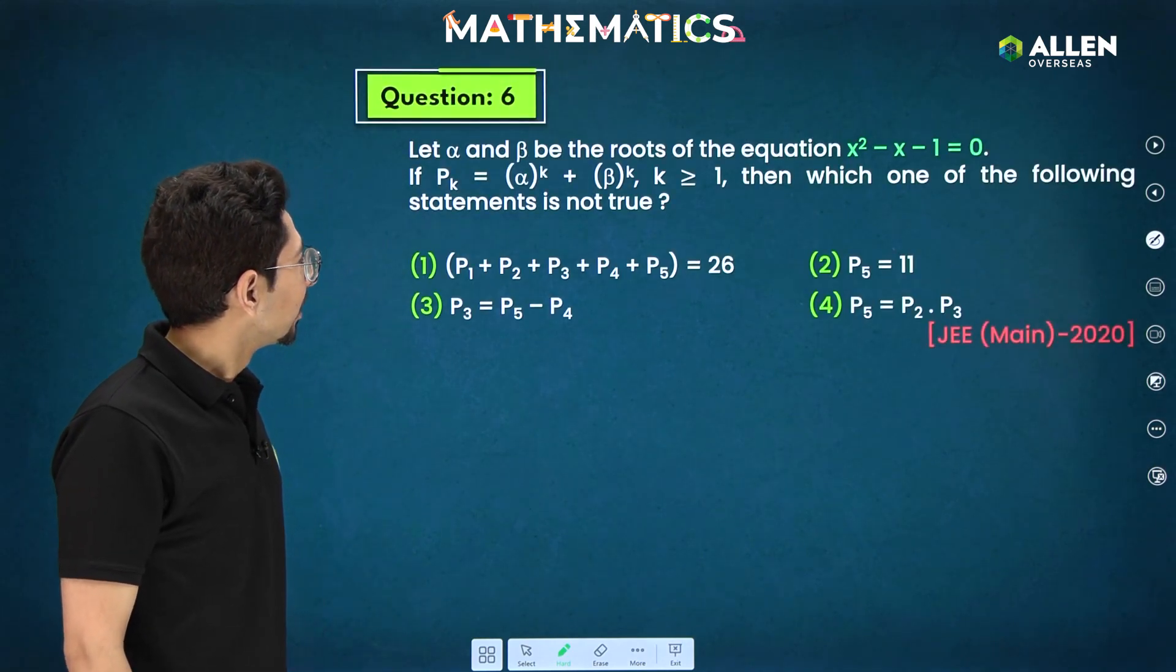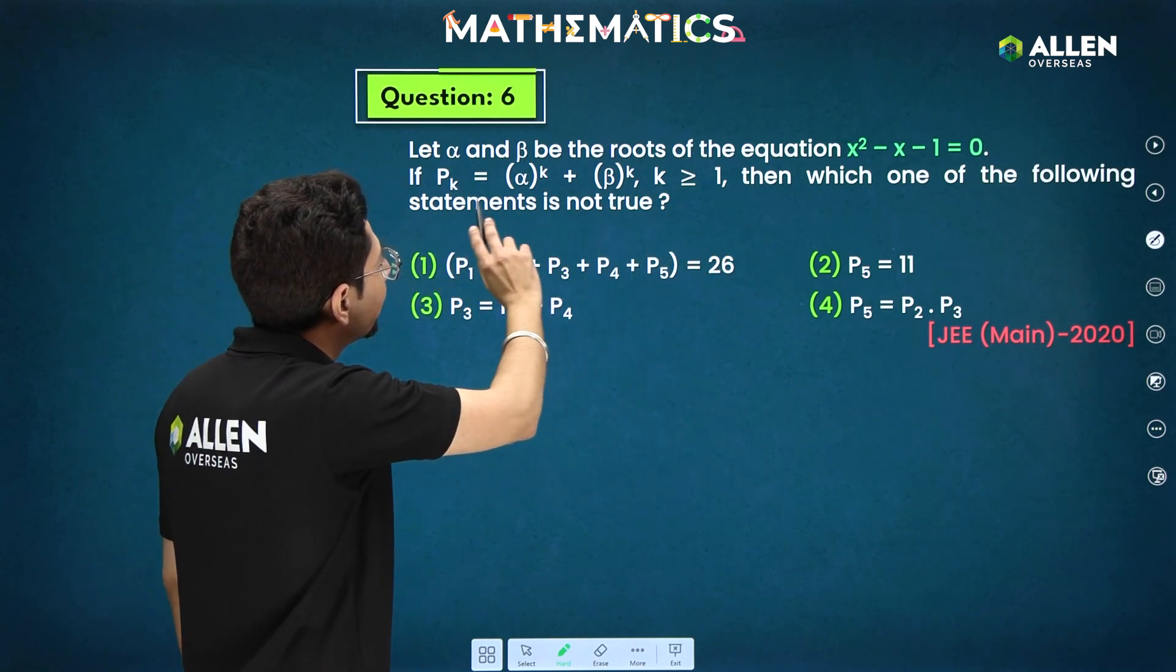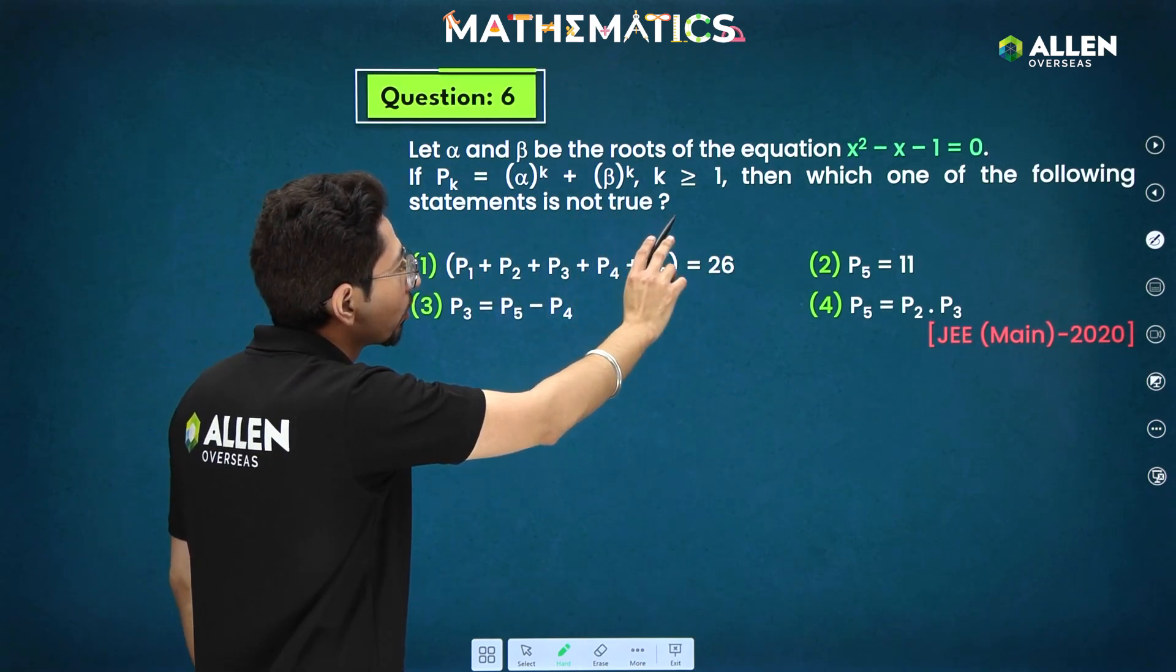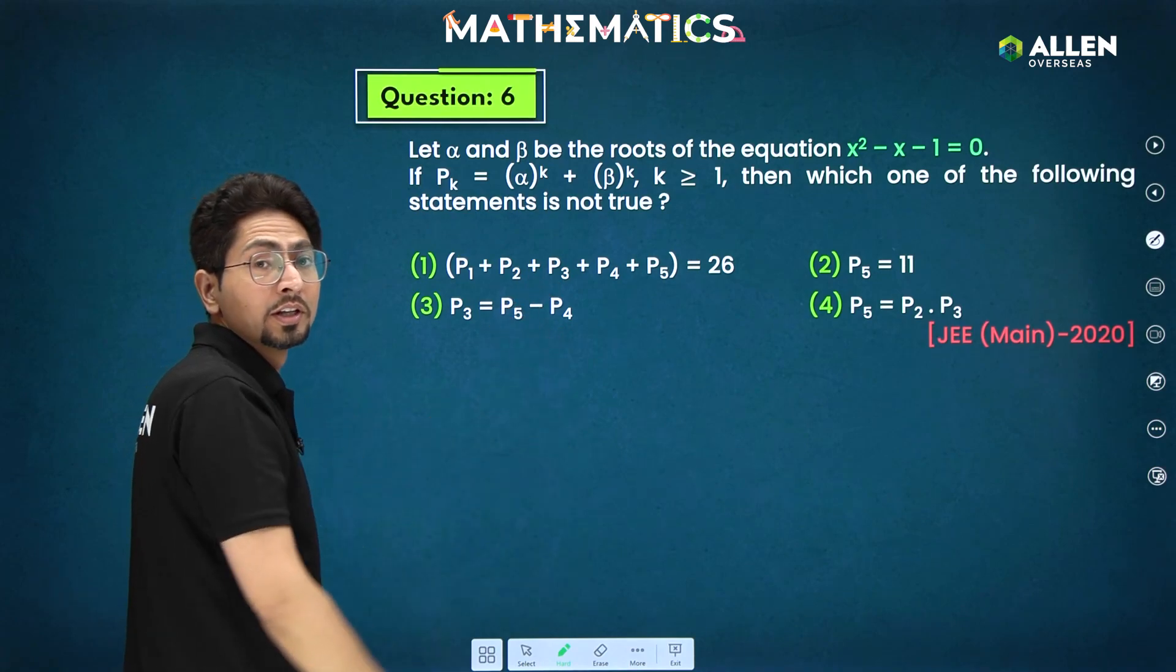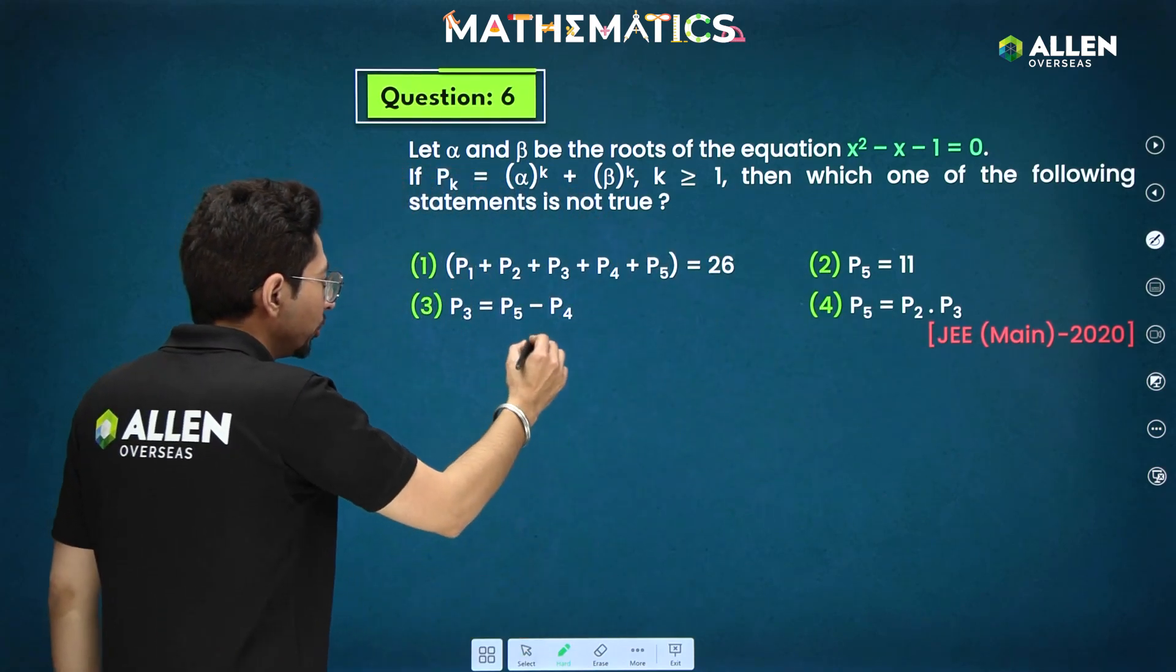This is given here. Let alpha beta be the roots of the equation. pk is defined k greater equal 1. Then which of the following is not true? This was also asked in JEE Main 2020. So make sure you do this question yourself.